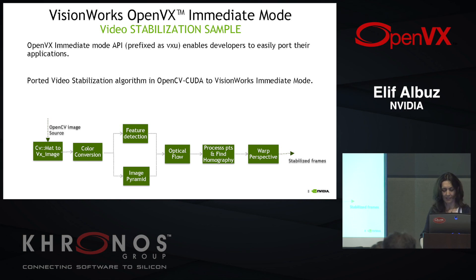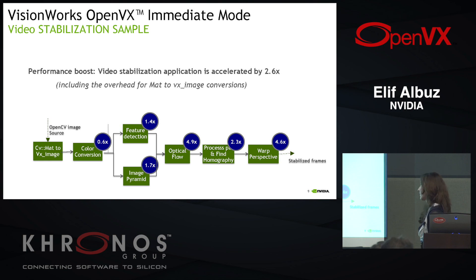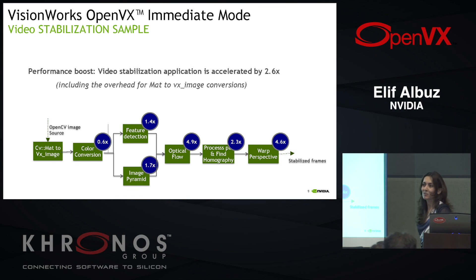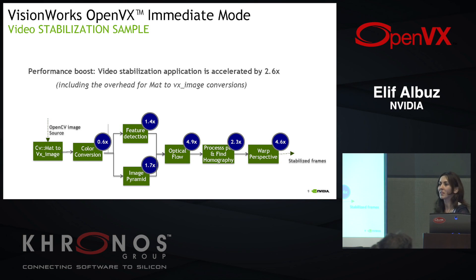When we took the OpenCV CUDA implementation and ported it to OpenVX, we saw a 40% improvement on feature detection, 70% on image pyramid, almost 5x on optical flow — we spent a lot of time on that because it's one of the most critical primitives. We also saw 2.3x on homography and process points, and almost 5x for warp perspective. Color conversion showed a slight regression, but it's a very small kernel, so it's negligible.